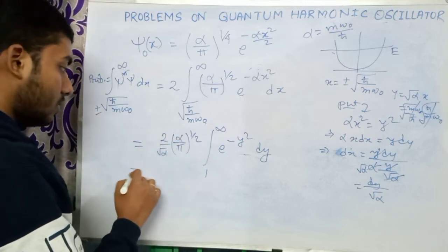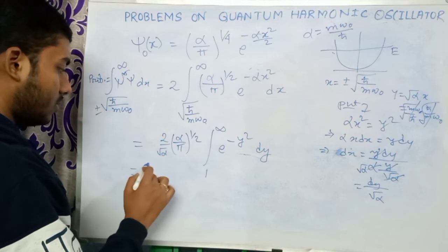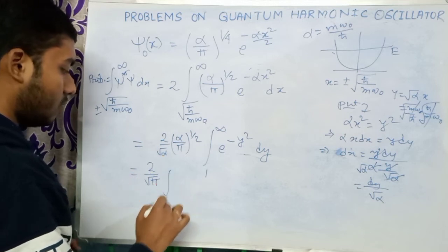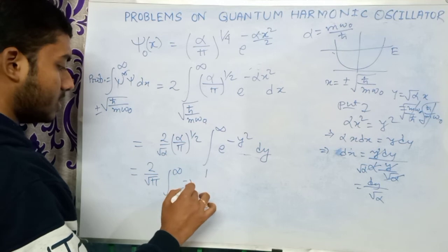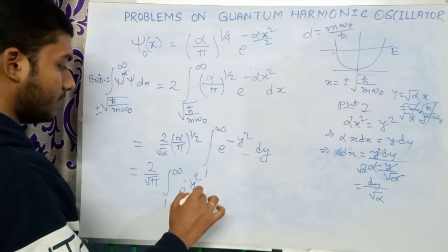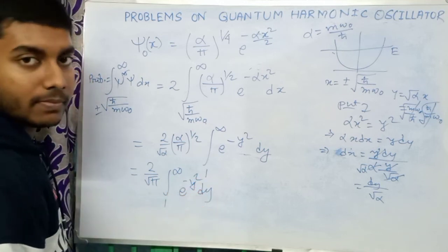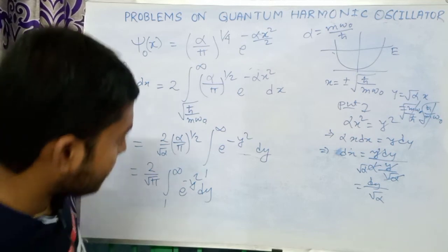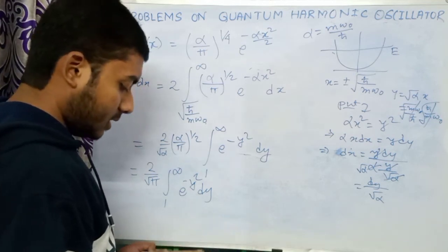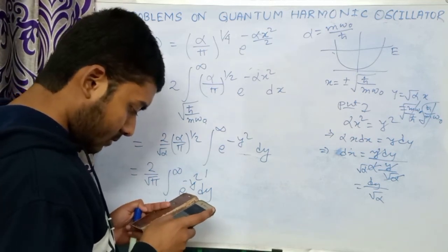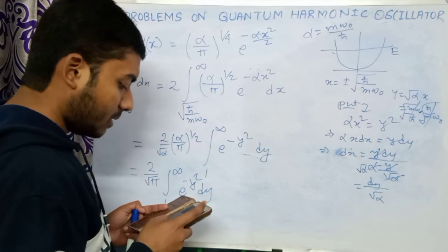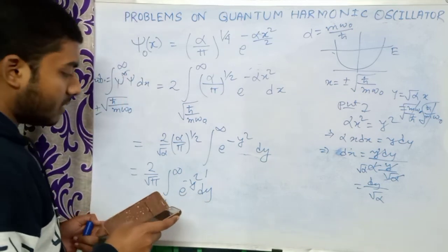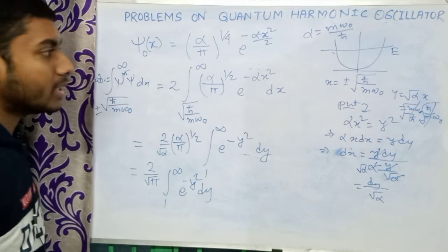So the probability is (2/sqrt(pi)) times the integral from 1 to infinity of e^(-y²) dy. You can see that one option is matched — the answer is option B.